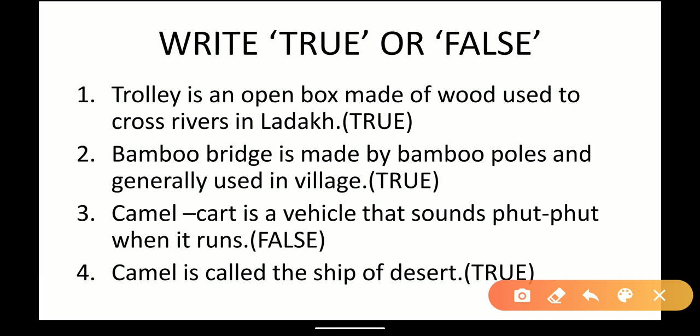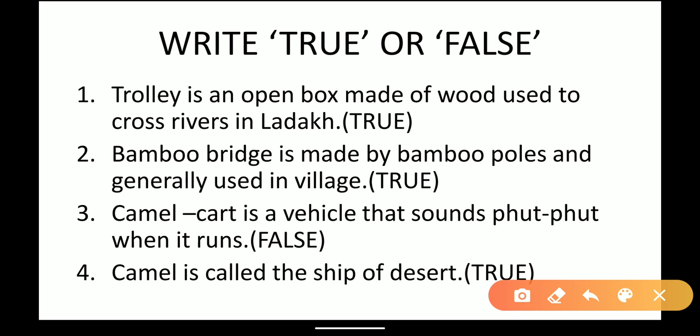Next, true or false. When the sentence is correct, you have to write true, and if the sentence is wrong, you have to write false. First: trolley is an open box made up of wood used to cross rivers in Ladakh. As we saw in the lesson, a trolley is an open box used to move from one side of the river to the other in Ladakh. The sentence is correct, so we write true.